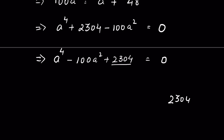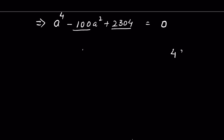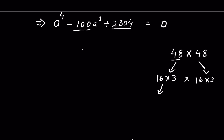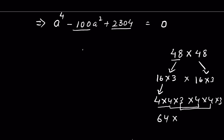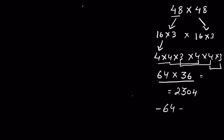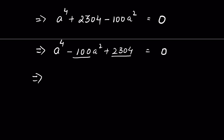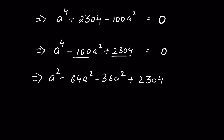We need two factors whose sum equals 100 and whose product equals 2304. Note that 2304 = 48 × 48 = 64 × 36. And 64 + 36 = 100, so −64 − 36 = −100. We use the two numbers 64 and 36. So: a⁴ − 64a² − 36a² + 2304 = 0.